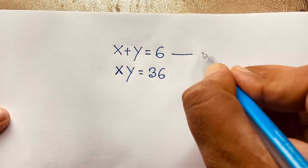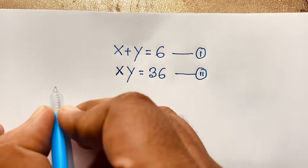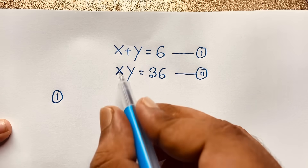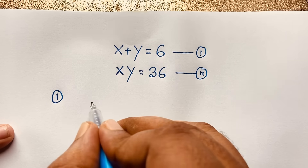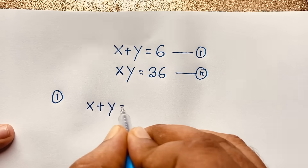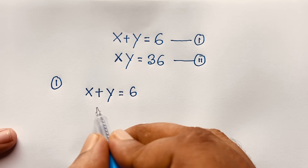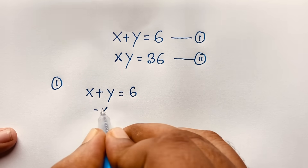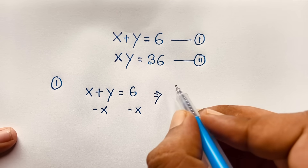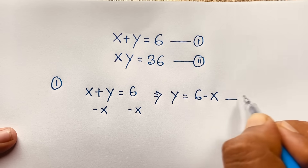So this is our first solution and this is our second solution. I take our first solution. Here x plus y is equal to 6. This is our first equation. Now at this moment I subtract both sides by x, so this expression will be y equals 6 minus x. This is our third equation.